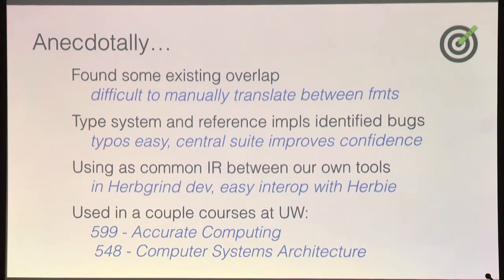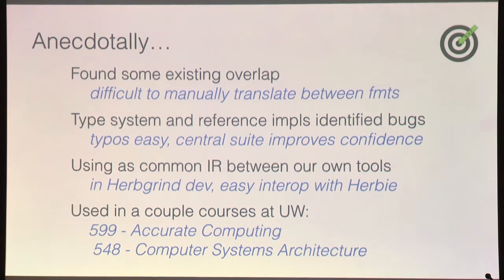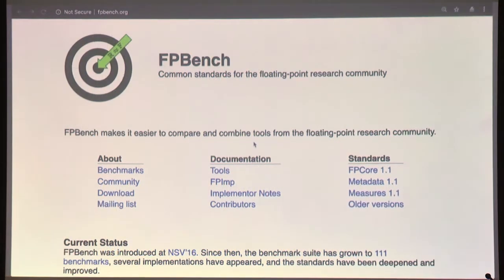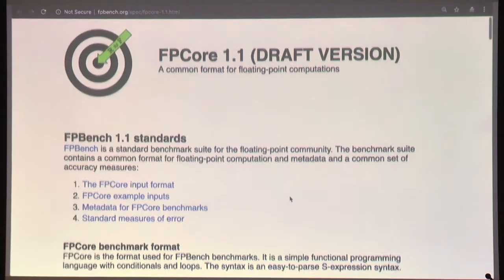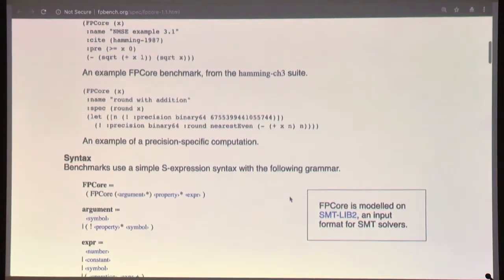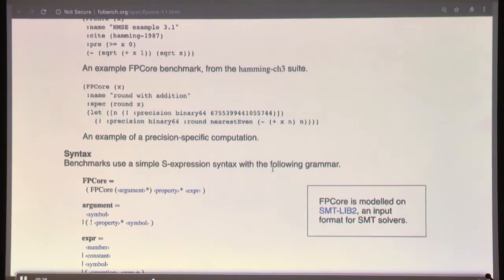We've found a bunch of overlap and things are usually pretty reproducible based on past results. One use case we didn't expect is this has been used in several courses where students are doing projects related to numerics. The FPBench standard specs are all online with full syntax and definitions for error metrics. The benchmarks are all online — about 120 small numerical kernels from automated improvement or sound verification of worst-case error bounds. You can search through them from Doppler shifts to pendulum swinging to n-body simulations.